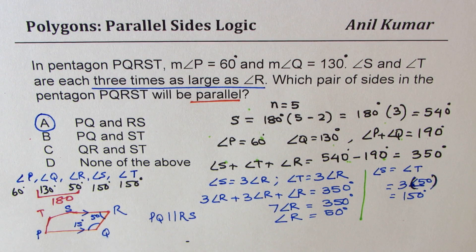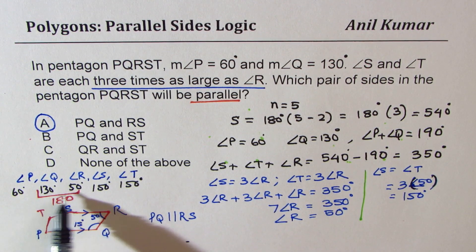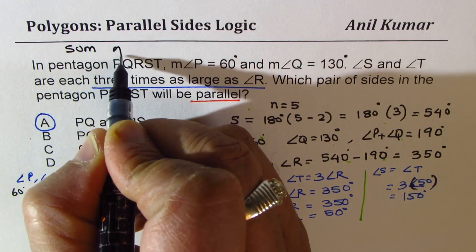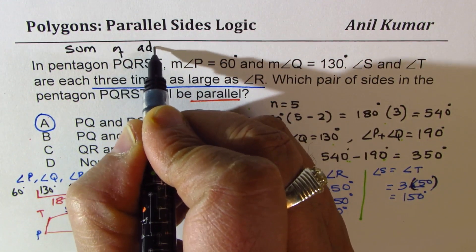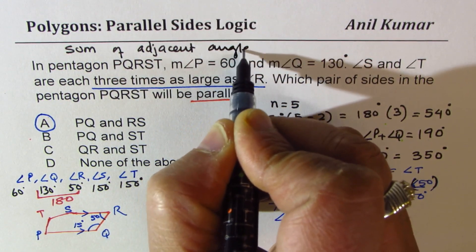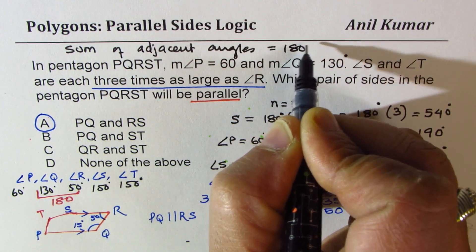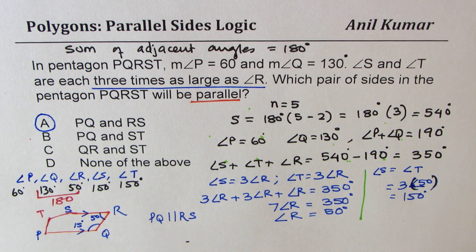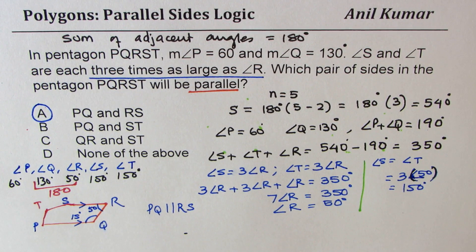We are looking for sum of angles to be linear pair. So basically, we are looking for sum of adjacent angles equals to 180 degrees. So that makes the two sides parallel. So I hope that concept is well taken care of. This is a very important question. Feel free to write your comments and share your views. And I hope you understand the concept. Thanks for watching and all the best.